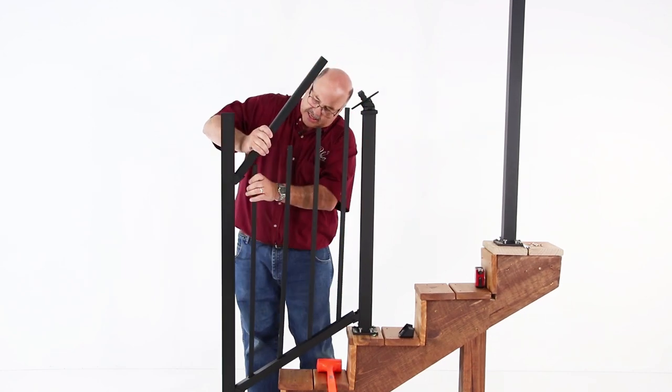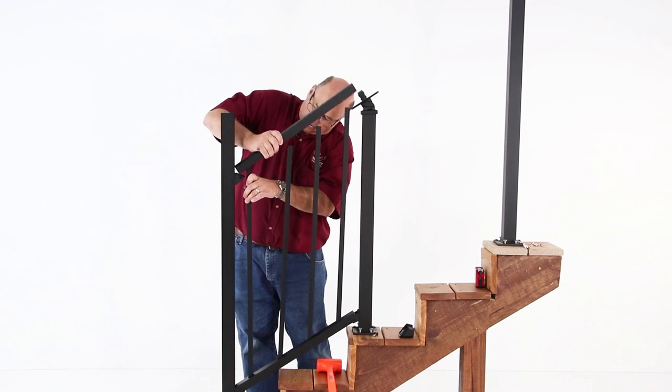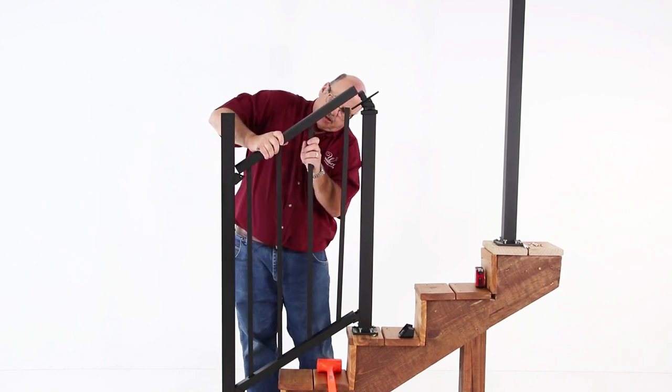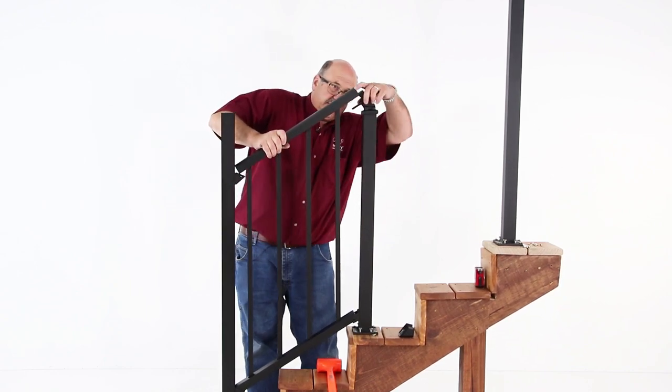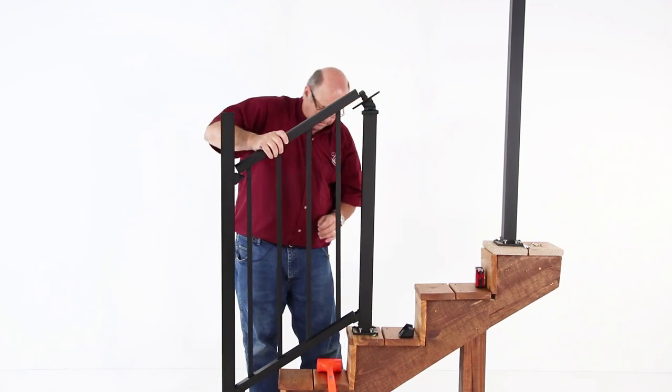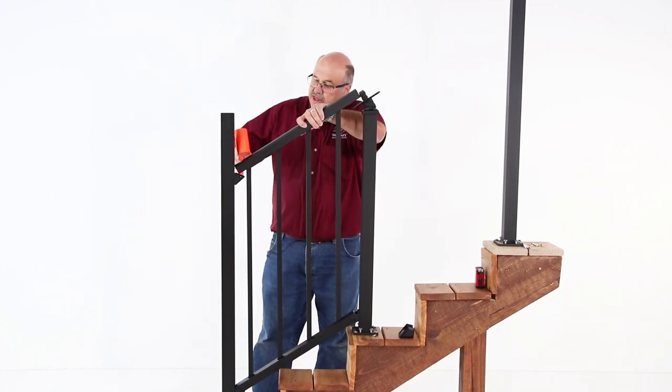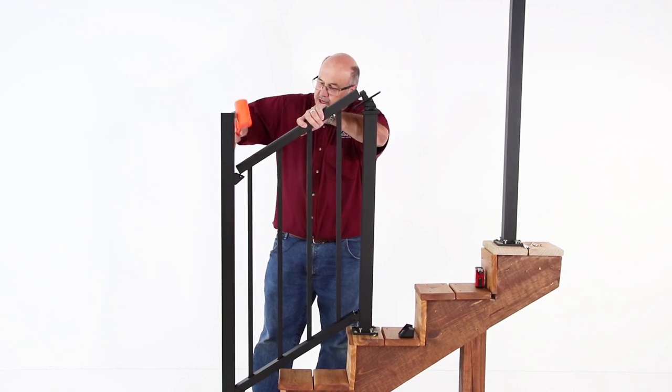We're going to replace this in the cup and start to position our balusters in place. Get your rubber mallet to help you position things. Make sure you're lined up with the cup.